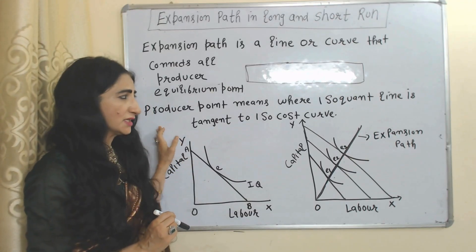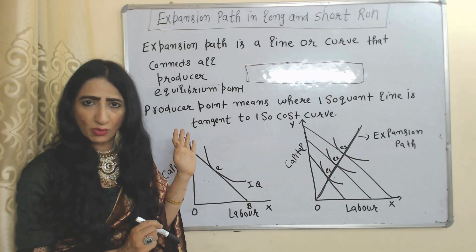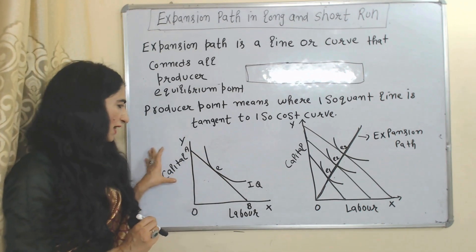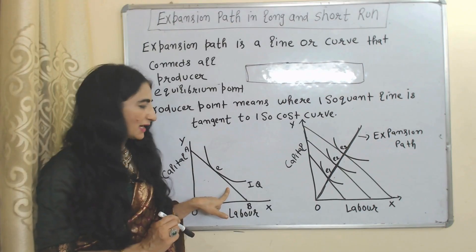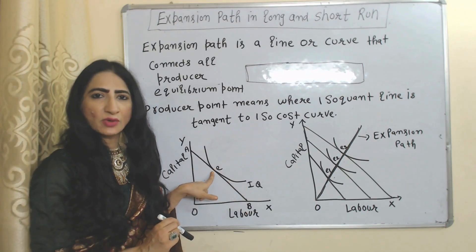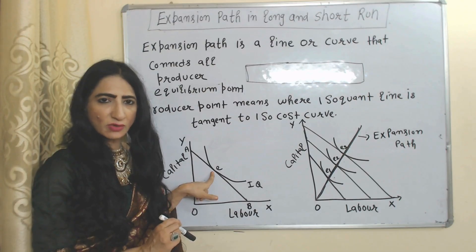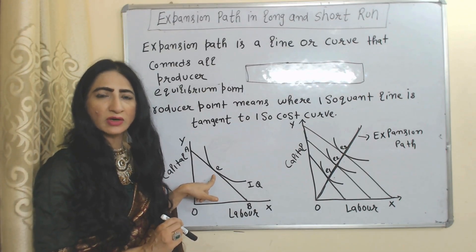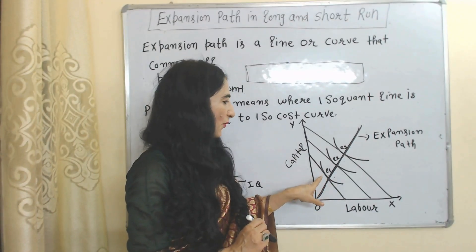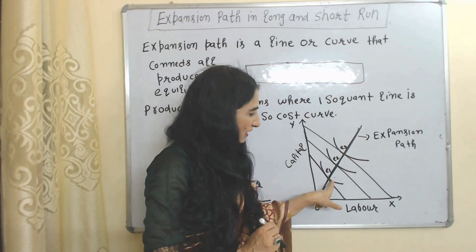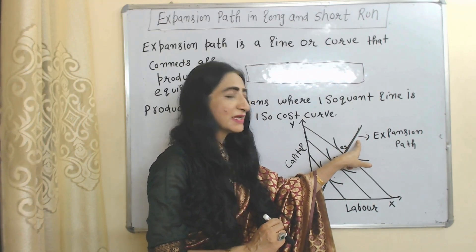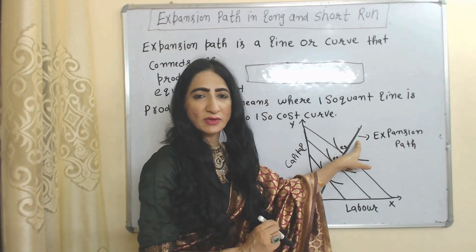Producer equilibrium point means where the isoquant line is tangent to the isocost curve. Here you can see on the x-axis we have labor and on the y-axis we have capital. AB is the isoquant line. At point E, the isoquant line is tangent to the isocost curve, so E is called the producer equilibrium point. We have multiple producer equilibrium points E1, E2, and E3, and the line connecting all of them is called the expansion path.